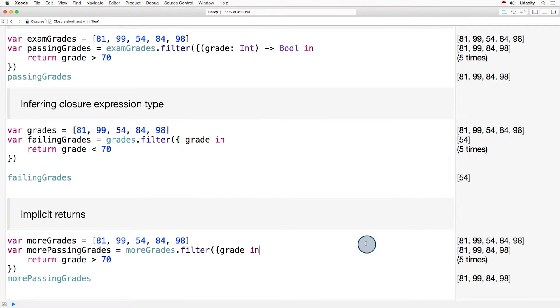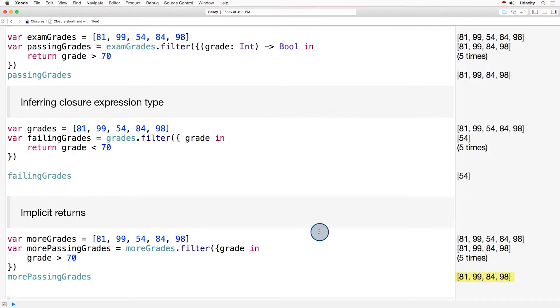Onto the next trick. If a closure is a single expression like this one, it can be inferred that the result of that expression should be returned. So we can remove the word return. And again, over here in the sidebar, you can see that our filter still works.